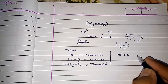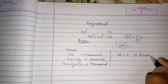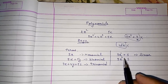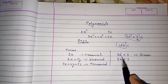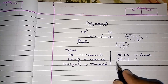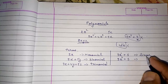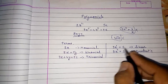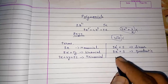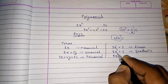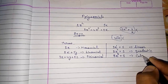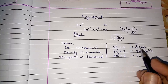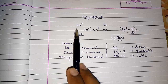When the highest degree is 1, it is called a linear polynomial. When the highest degree is 2 — for example, 3x squared plus 5 — it is called a quadratic polynomial. When the degree is 3 — for example, x cubed plus 5 — it is called a cubic polynomial. For degree 4 and beyond, names exist but we do not need to study them here.